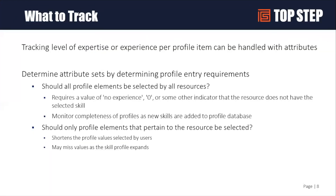Once you decide what you want to track, you have to decide if there's a secondary category that goes with each of those. Things like level of expertise, years of experience, or whether a certification is current or expired — those are all called attributes. The attributes are defined at the level of the skill category that you set up. You define the attribute, then you link the skill type and the attribute together to get your full profile.